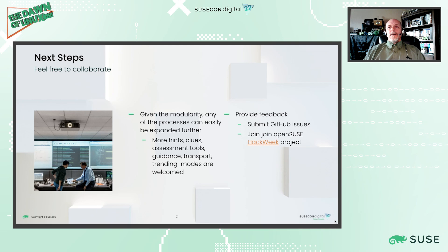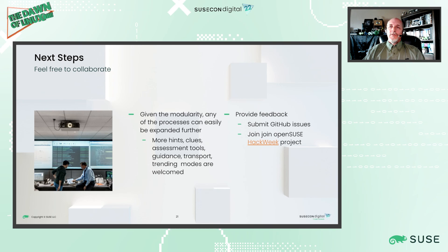For next steps, we want more usage of modularity: more hints and clues like in the Ludo space, more assessment tools like in the Taxi space, and more guidance. We'd love to hear from folks — what would you like the guidance to be, and how do we transport things and where do trending modes go? All these projects are on GitHub. There is an OpenSUSE Hack Week project coming up at the end of June — if you'd like to join, collaborate, help with things, or just give us feedback, that would be incredibly important. We're doing this as a side project but would love more interaction and contribution.